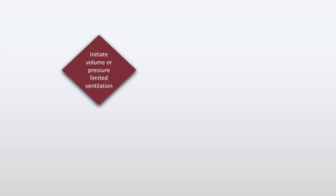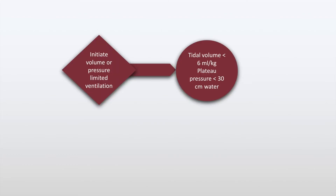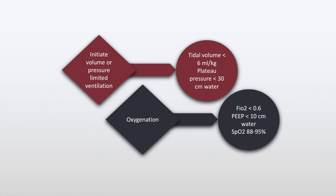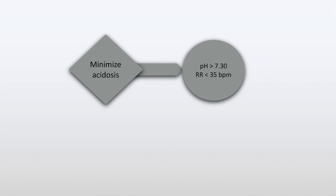We will now summarize the management of ARDS. We must initiate volume or pressure limited ventilation with a tidal volume of less than 6 mL/kg with a plateau pressure of less than 30 cm of water. The oxygenation settings to use are a FiO2 of less than 0.6 and a positive end expiratory pressure of less than 10. We must target an SpO2 of 88 to 95%, minimize acidosis, target a pH of more than 7.3, and a respiratory rate of less than 35 breaths per minute.